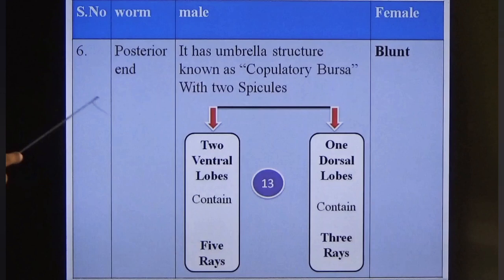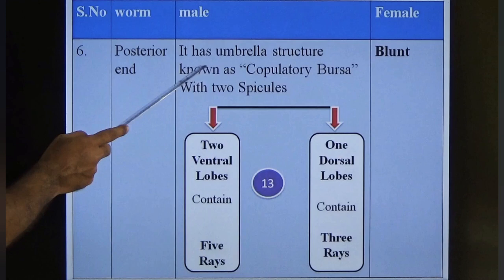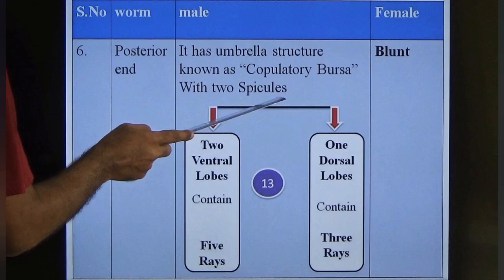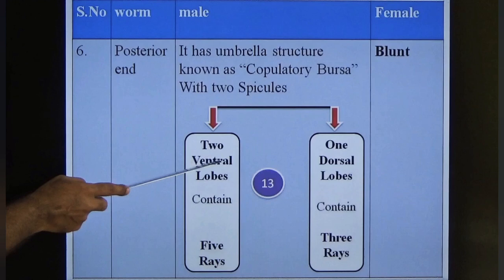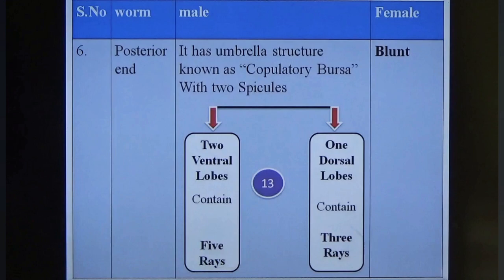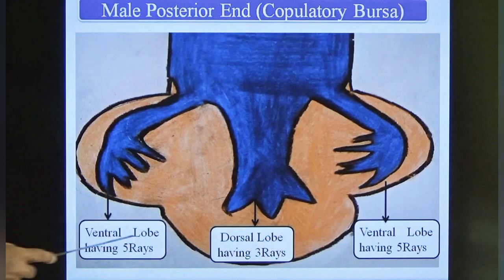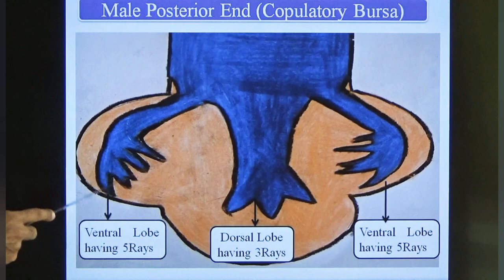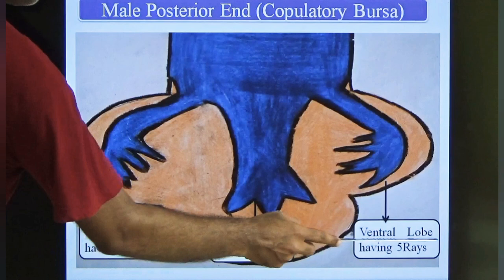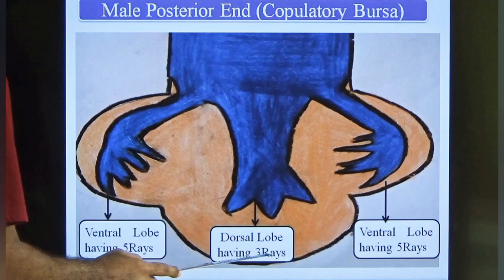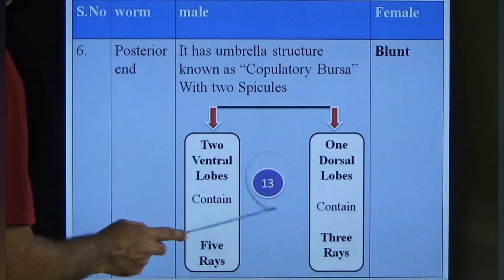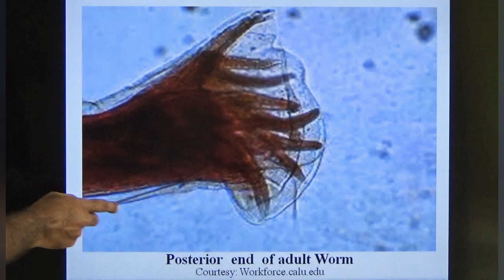The posterior end of the male worm has an umbrella-like structure called the copulatory bursa with two spicules. It consists of two ventral lobes each containing five rays, and one dorsal lobe containing three rays — giving a total of thirteen rays present only in the male worm.